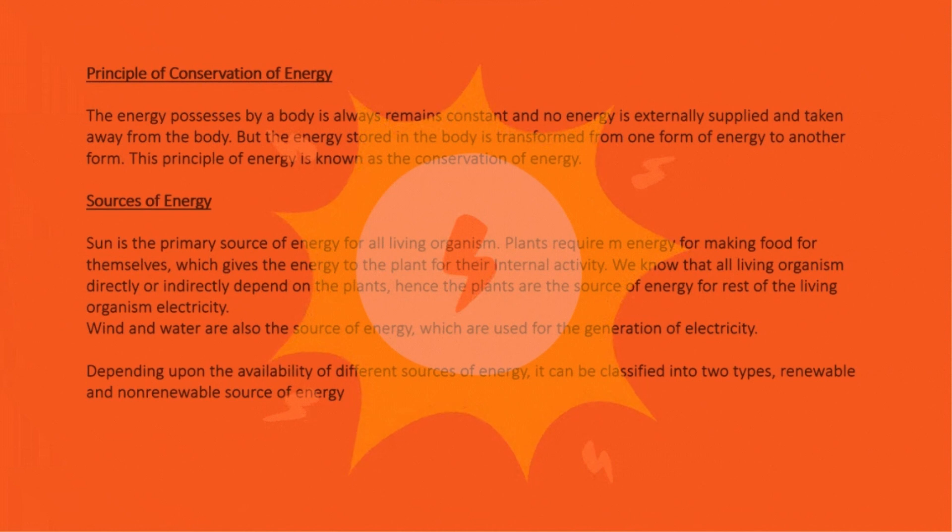Sources of Energy: Sun is the primary source of energy for all living organisms. Plants require energy for making food for themselves, which gives the energy to the plant for their internal activity. We know that all living organisms directly or indirectly depend on the plants, hence the plants are the source of energy for rest of the living organisms. Electricity: Wind and water are also the source of energy which are used for the generation of electricity. Depending upon the availability of different sources of energy, it can be classified into two types: renewable and non-renewable source of energy.